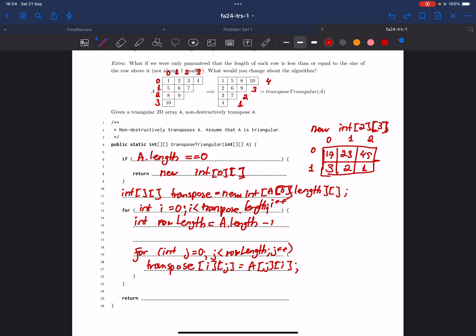Now we need to change one last thing, which is instantiation of our empty arrays in our transpose. So transpose[i] is a new integer array of length row length.